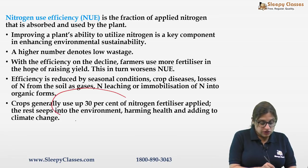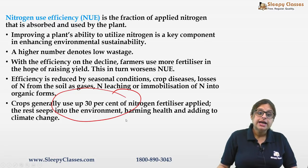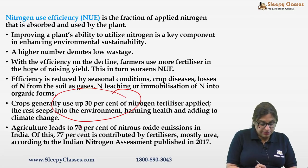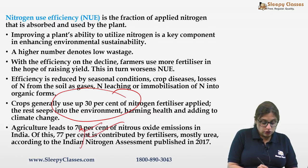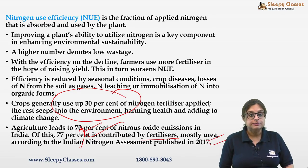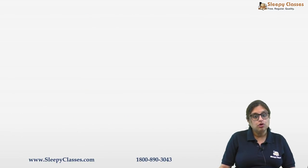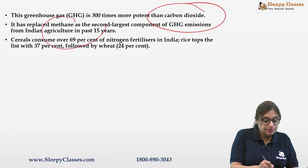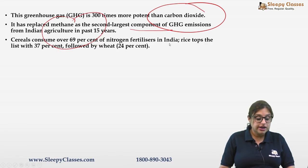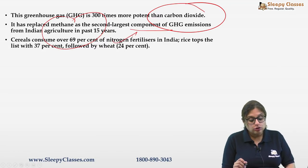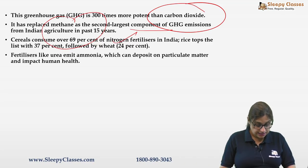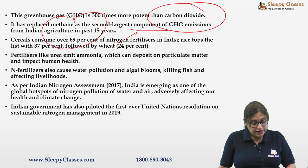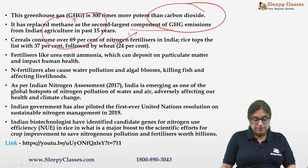Crops generally use only 30% of applied nitrogen fertilizer — the rest goes into the environment. In India, agriculture leads to 70% of nitrous oxide emissions, of which 77% is from fertilizers (mostly urea). Cereals consume 69% of nitrogen fertilizers, with rice topping at 37%. Urea emits ammonia (harmful) and produces N₂O (a greenhouse gas). N₂O has replaced methane as the second largest greenhouse gas component from agriculture.